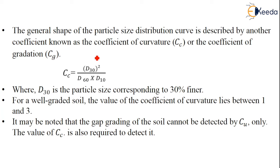The general shape of the particle size distribution curve is described by another coefficient known as coefficient of curvature Cc or the coefficient of gradation Cg. Cc is equal to D30 square by D60 times D10, where D30 is the particle size corresponding to 30% finer. For a well graded soil, the value of Cc lies between 1 and 3. It may be noted that the gap grading of the soil cannot be detected by Cu only. The value of Cc is also required to detect that property.